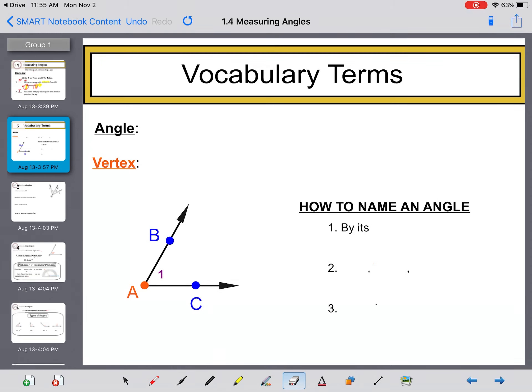Two definitions here. You have the angle and the vertex. An angle is formed by two rays with the same endpoint. Here is the symbol for an angle. The vertex is the turning point of an angle or the corner. A is your vertex in this image below.